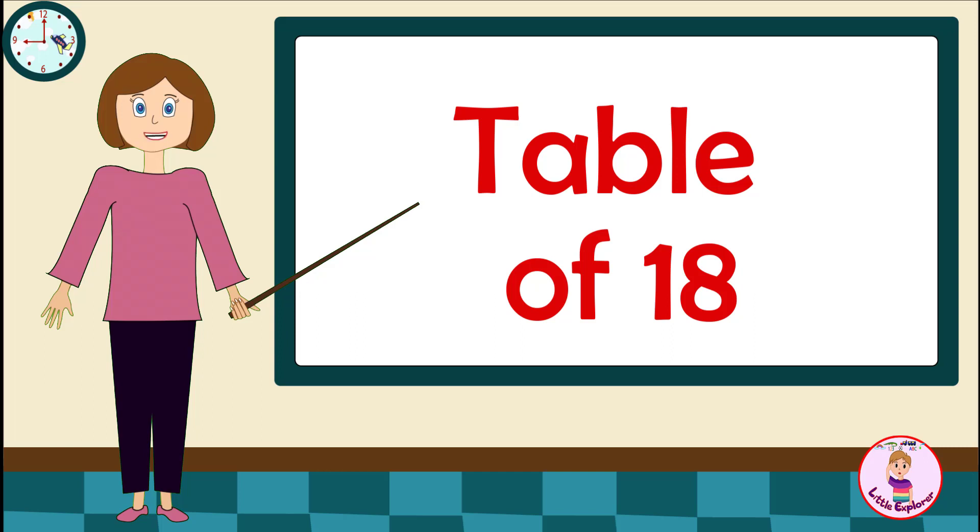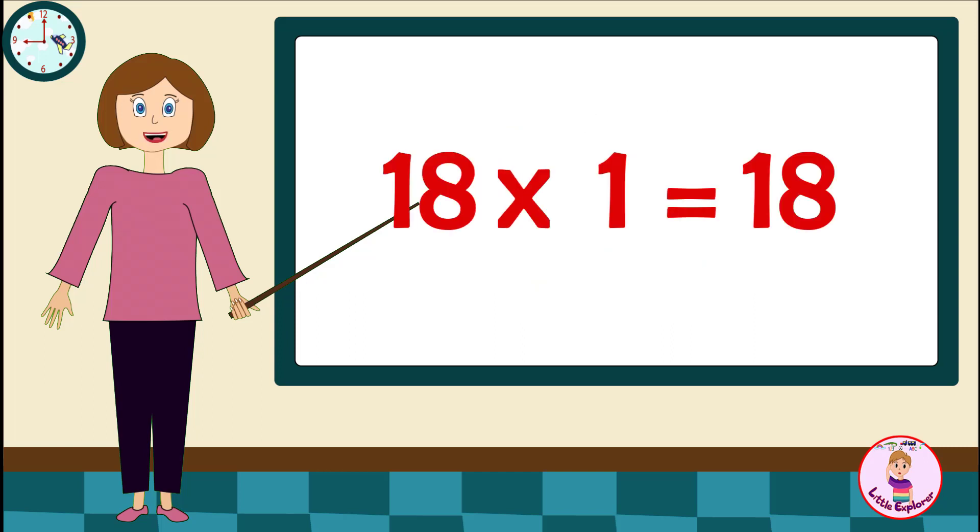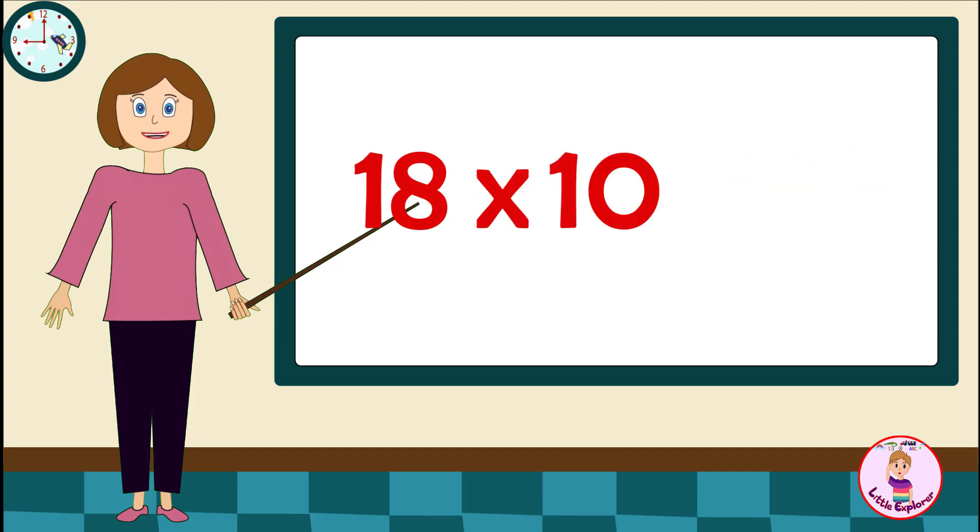Table of 18: 18 ones are 18, 18 twos are 36, 18 threes are 54, 18 fours are 72, 18 fives are 90, 18 sixes are 108, 18 sevens are 126, 18 eights are 144, 18 nines are 162, 18 tens are 180.